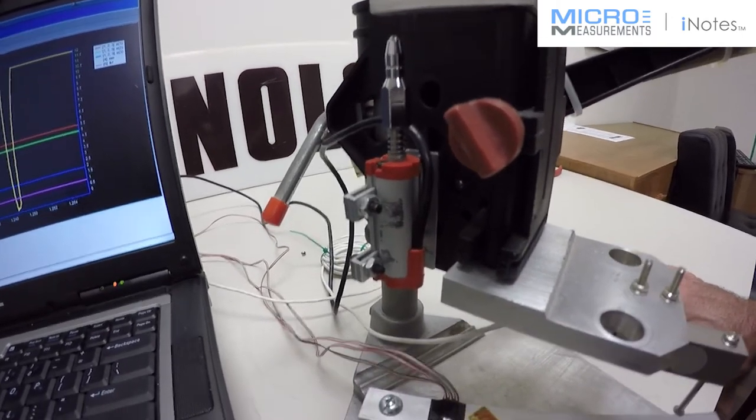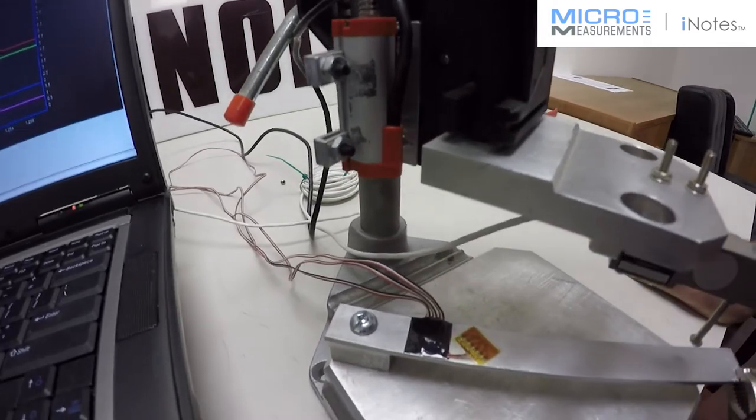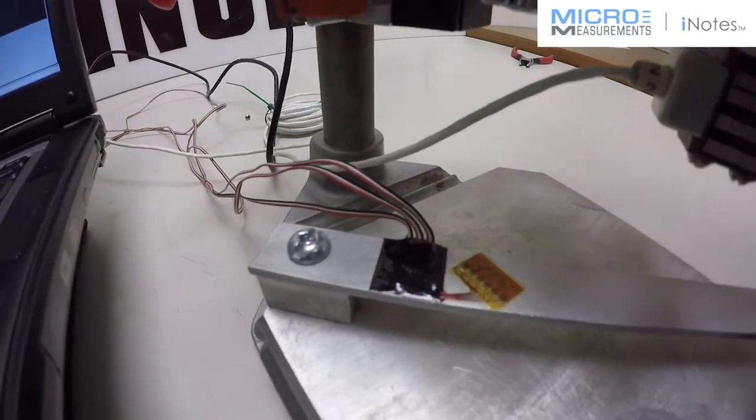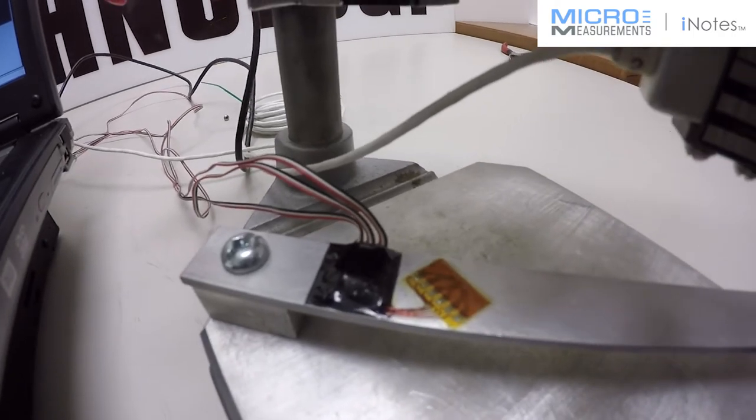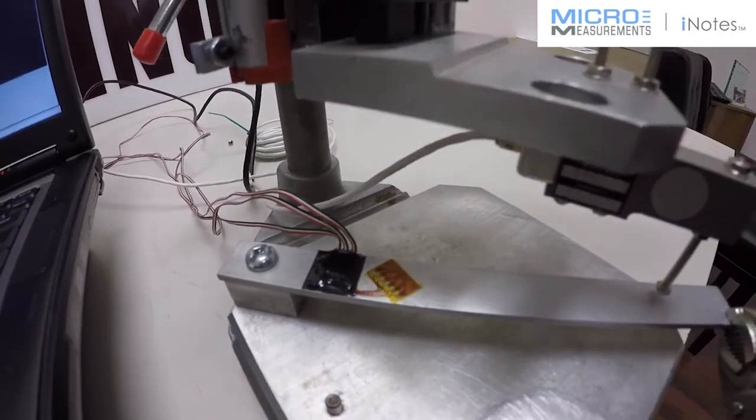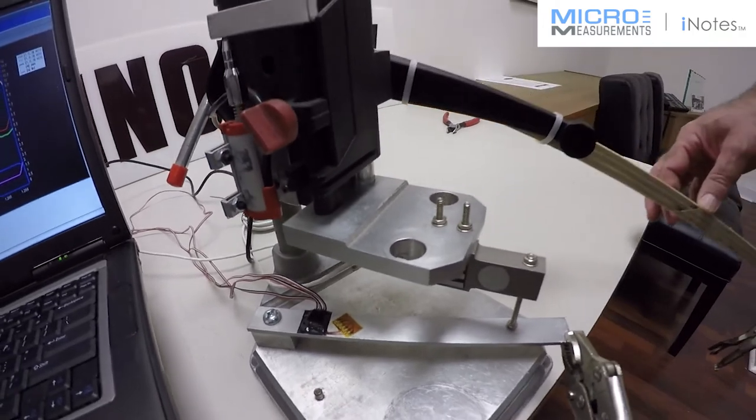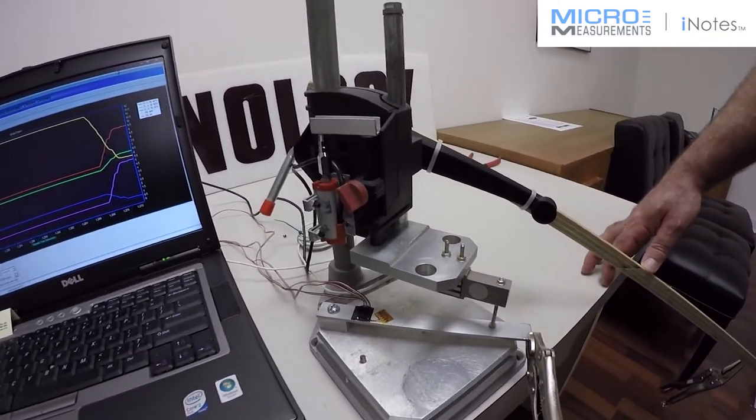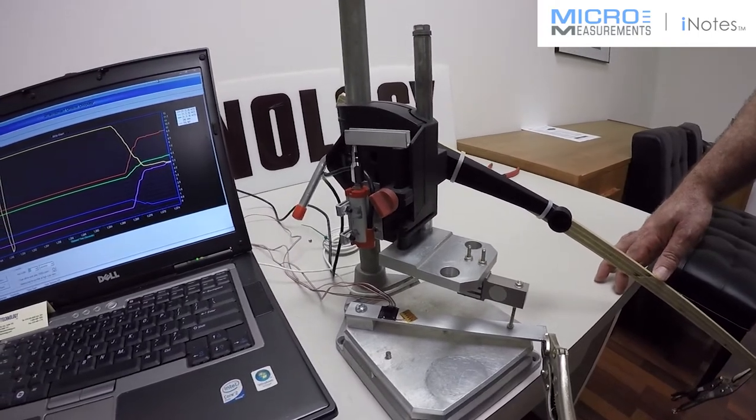With the three-element rosette showing the strain in the beam, I'll demonstrate by loading it up. We're acquiring the data on our micro measurements System 8000, which allows us to record all channels up to a thousand samples per second in terms of reading the data.